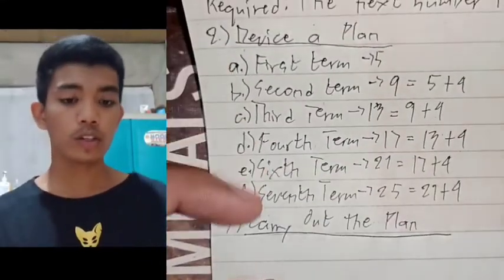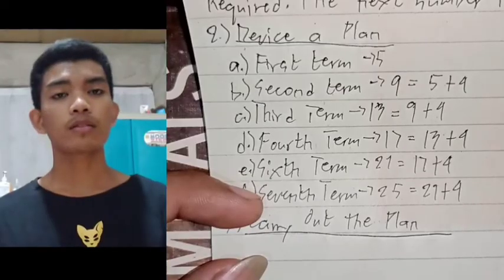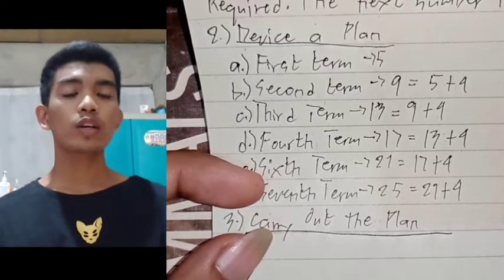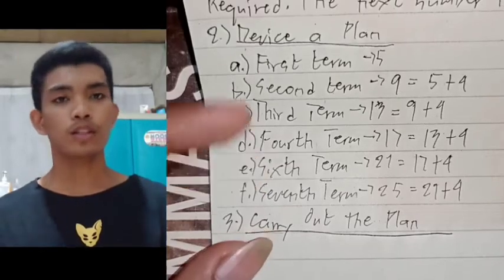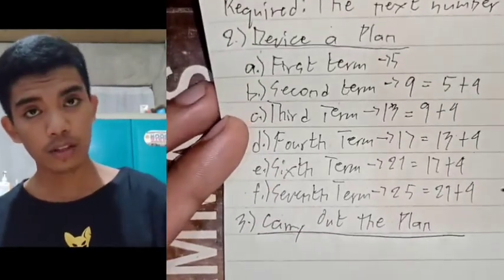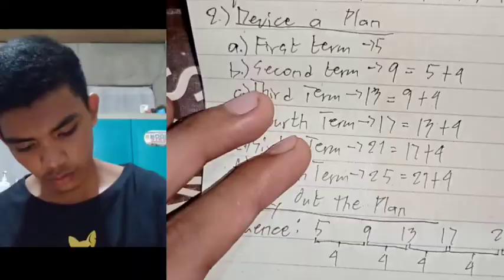In order to represent this in an understandable format, we can use a difference table. So we will write out the difference table right now. The sequence is 5, 9, 13, 17, 21, 25, with 4 units difference between each term.